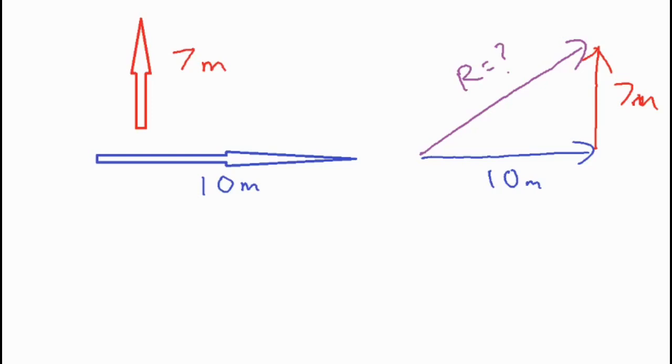In order to do that, it's fairly easy. You're just going to use Pythagorean theorem because we have a right triangle and we have two sides except the hypotenuse. So we're going to use a² + b² = c². So we have 10² + 7² = c², and I'll just call it R² because it's our resultant.